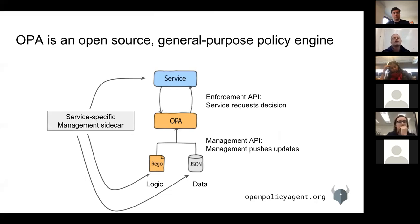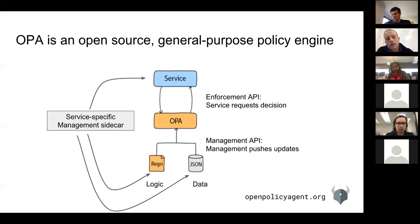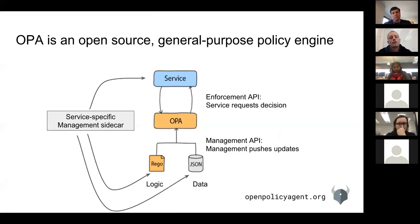For some integrations we've added a service-specific management sidecar to OPA. With Kubernetes, there's a sidecar that runs next to OPA and pulls policies out of the Kubernetes API server and pushes them into OPA. That Kube sidecar will also grab all pods currently running from the API server and push that as data into OPA — keeping OPA as a host-local policy engine completely separate from the management piece.